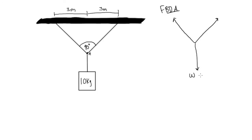So we know that, we'll call this one weight, this is equal to 10 kilograms times 9.81 meters per second squared, and that will give us our weight of 98.1 newtons.